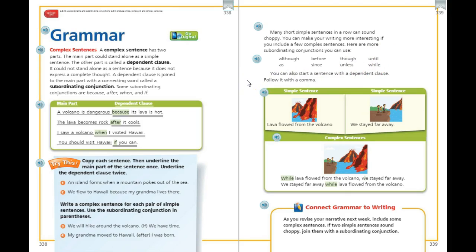You can also start a sentence with a dependent clause and then follow it with a comma. So here's a simple sentence: Lava flowed from the volcano. Another simple sentence: We stayed far away. The words that are in highlight in your book are the subordinating conjunctions. So while lava flowed from the volcano, we stayed far away.